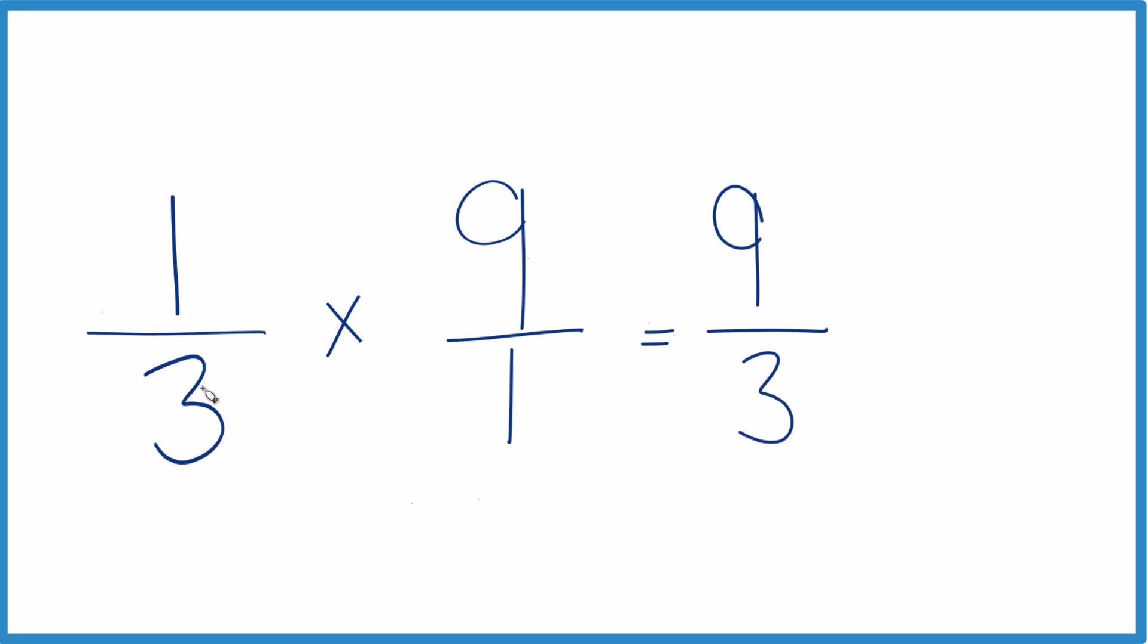And we end up with one-third times nine equals nine-thirds. Nine divided by three, that's three. Three times three is nine. So in answer to our question, when we take one-third of nine or one-third times nine, we get three.